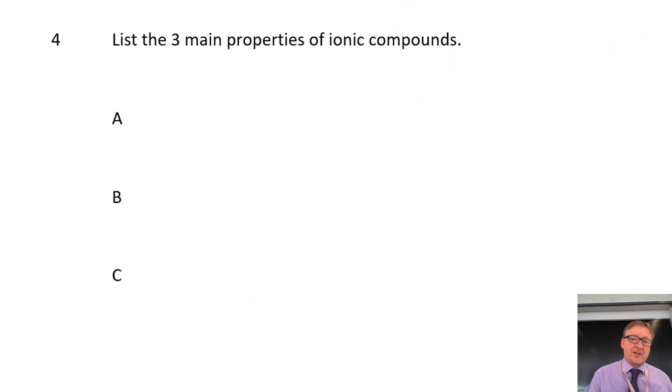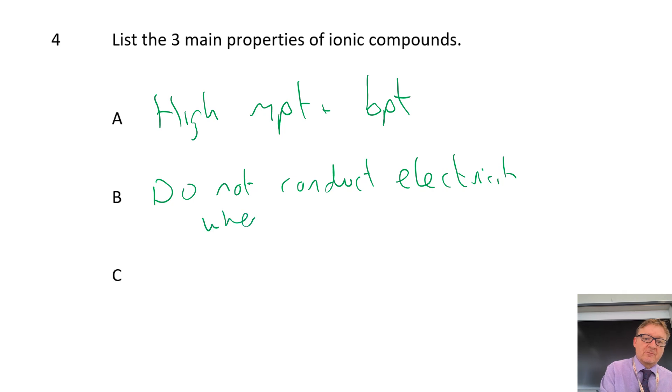The three main properties of ionic compounds. Property number 1 is they have high melting and boiling point. So that basically means you have to heat them up a lot. They do not conduct electricity when solid.